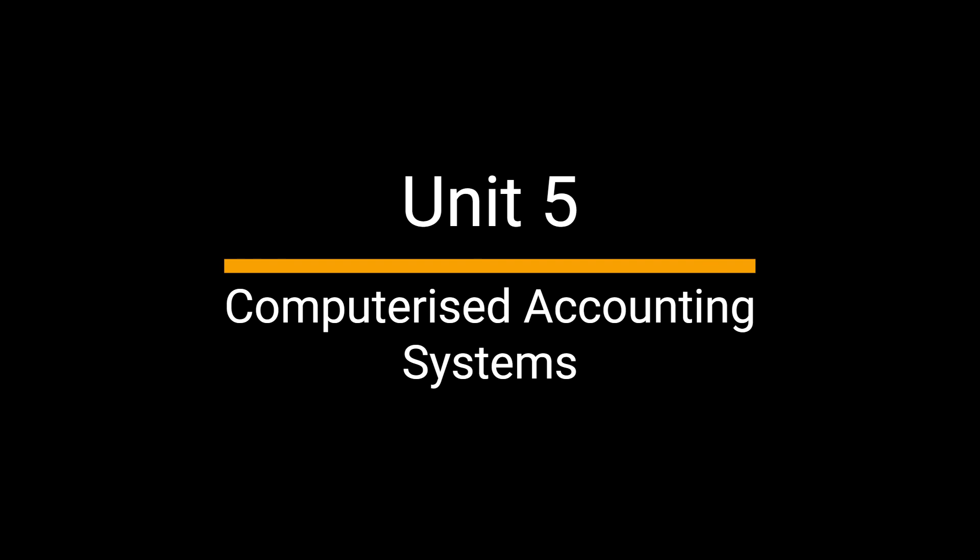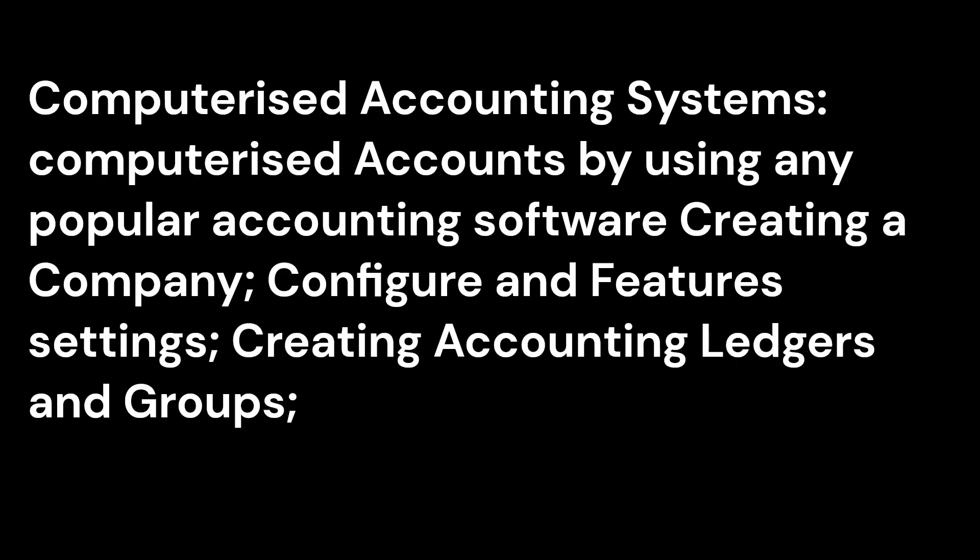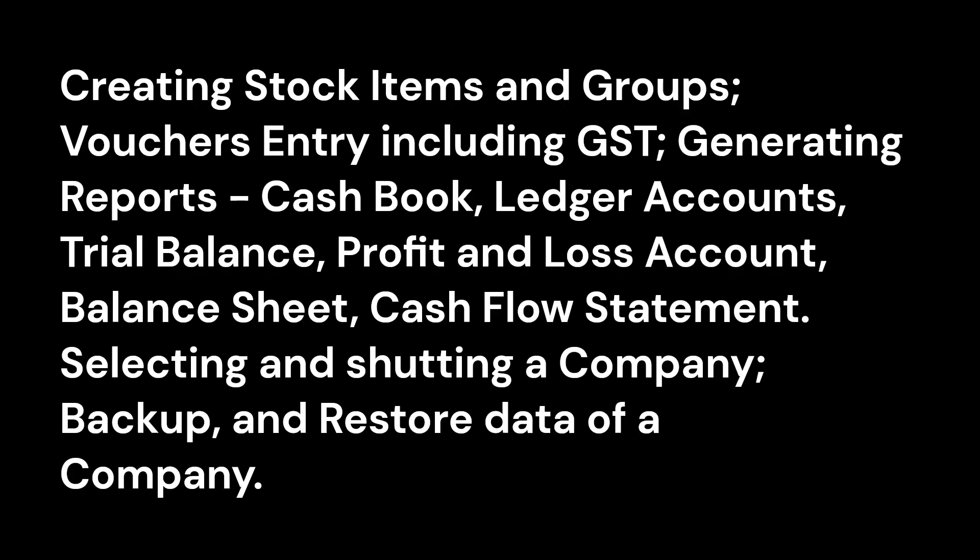Unit 5: Computerized Accounting Systems. Computerized accounts using any popular accounting software — creating a company, configure and feature settings, creating accounting ledgers and groups, creating stock items and groups, voucher entry including GST. Generating reports: cash book, ledger accounts, trial balance, profit and loss account, balance sheet, cash flow statement. Selecting and shutting a company, backup and restore data of a company.